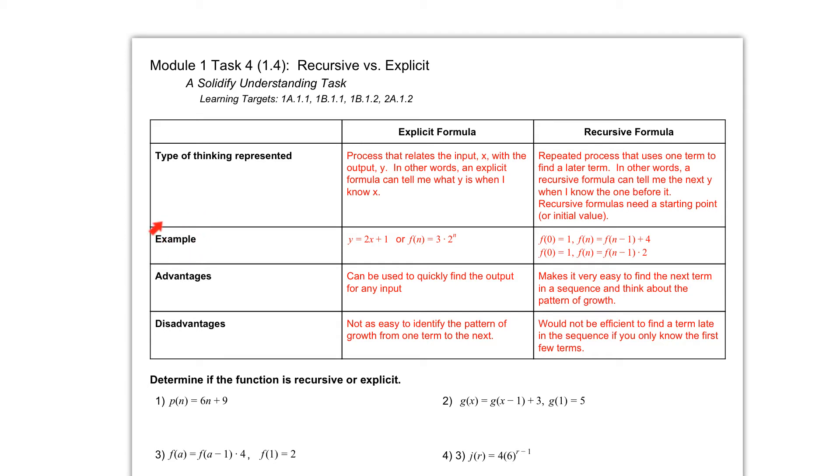Then we talk about examples of both. So an explicit formula could be something like y equals 2x plus 1. This is an arithmetic type of sequence. Or you could have something like f of n equals 3 times 2 raised to the n. This is a geometric sequence. Notice this one uses y, this one uses f of n. This is function notation.